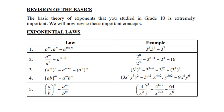We will now revise these important concepts. The first law — you'll remember from grade 8 — if you multiply two terms like a to the power m times a to the power n, then you add the exponents, so it becomes a to the power m plus n. For example, 3 to the power 3 times 3 to the power 4 is 3 to the power 3 plus 4, which is 3 to the power 7.